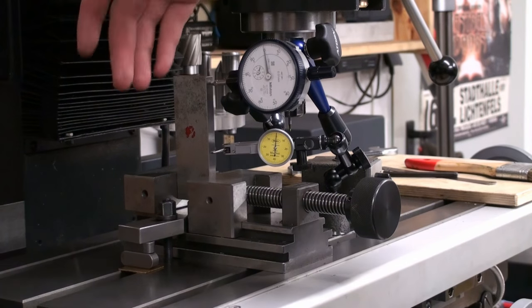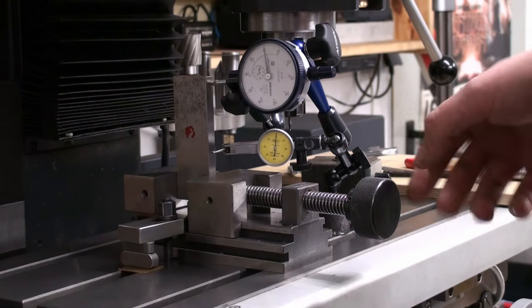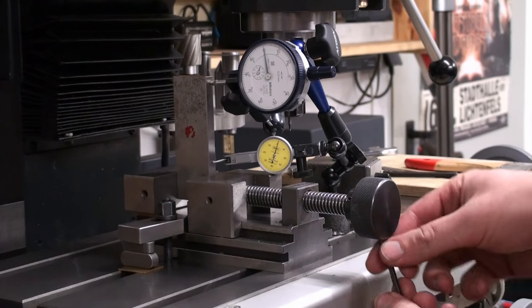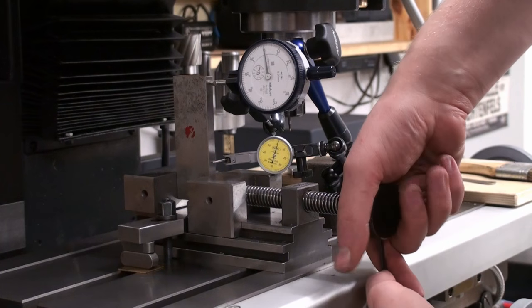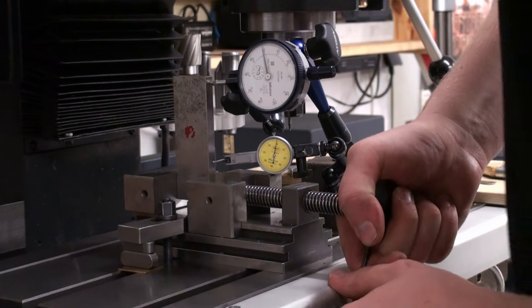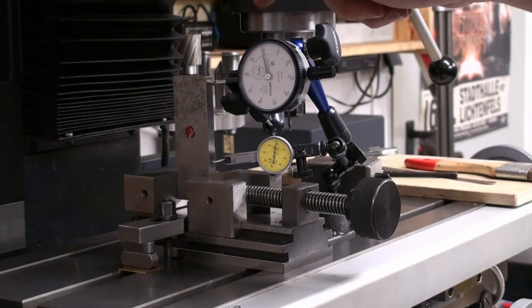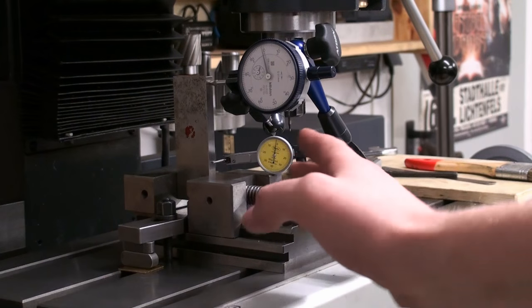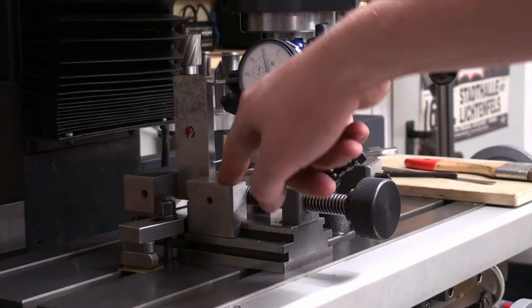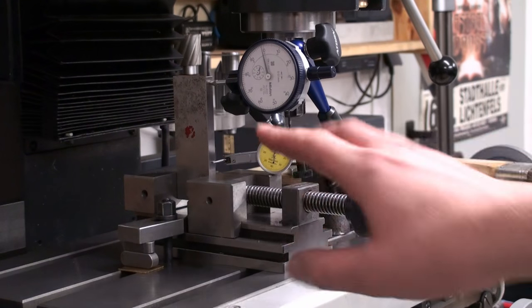Okay, last test: squareness deflection on the standard grinding vise. Same setup as before. We're just cranking down and look how much difference we get between down here and up here. And I will not crank down as hard as before because I don't want to harm this precision vise.